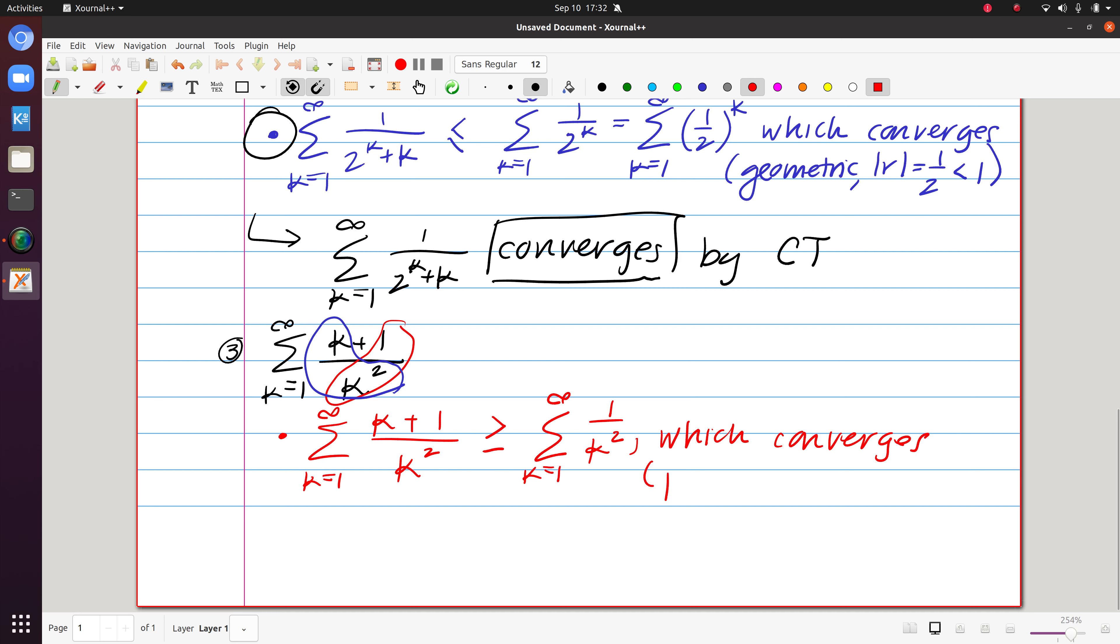And again, why? That's because it's a p series where our value of p, which is two, is strictly greater than one.